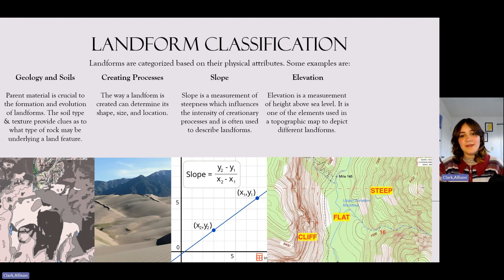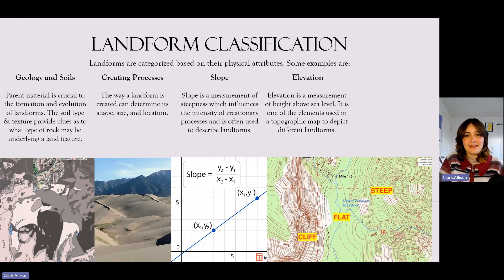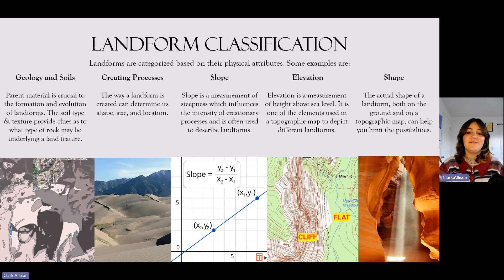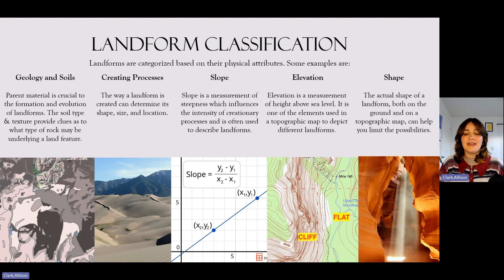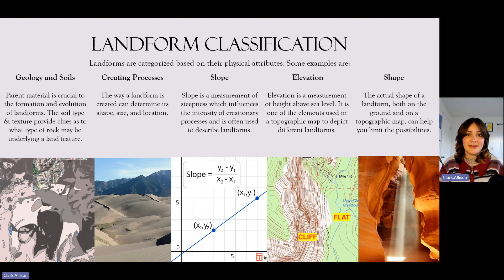Elevation, for our purposes, will be the measurement of height above sea level, and is one of the elements used in a topographic map to depict different landforms. Finally, there's shape — the actual shape of a landform both on the ground and on a topographic map — which can help limit the possibilities of what type of landform you might be looking at.